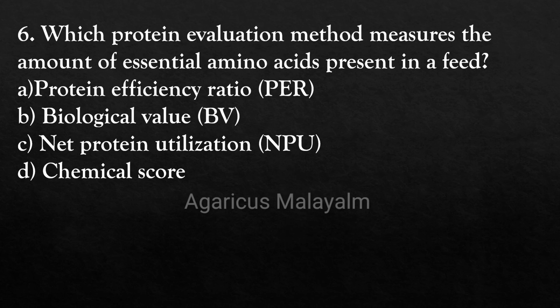Sixth question: which protein evaluation method measures the amount of essential amino acid present in a feed? Answer options: option A, protein efficiency ratio; option B, biological value; option C, net protein utilization; option D, chemical score.